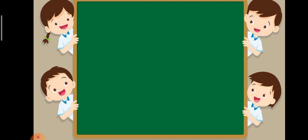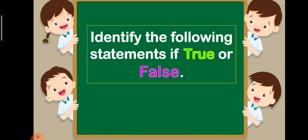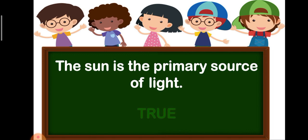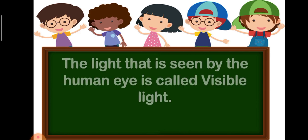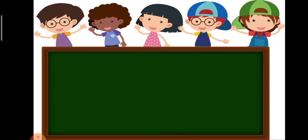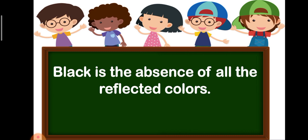Now, let's have an activity. Identify the following statements if true or false. The sun is the primary source of light. It's true. The light that is seen by the human eye is called visible light. True. Black is the absence of all the reflected colors. True.